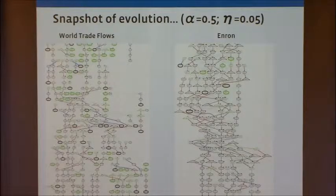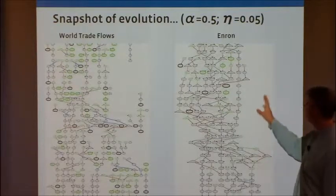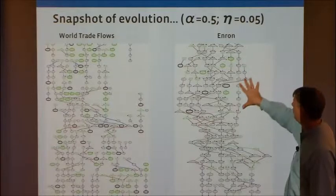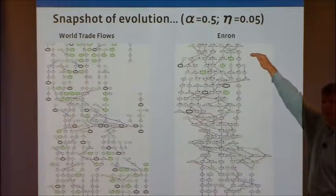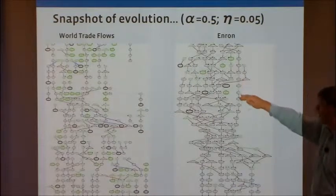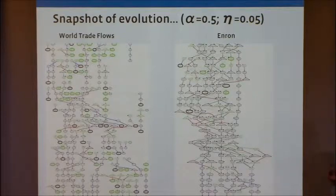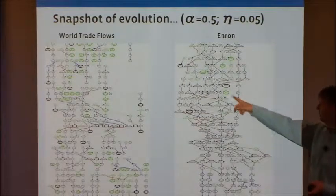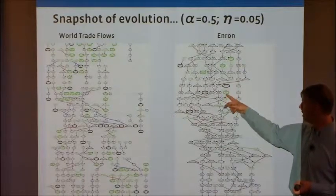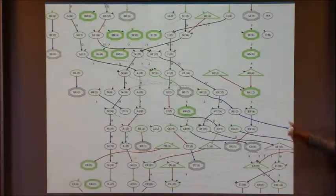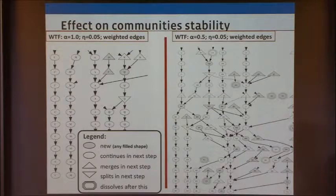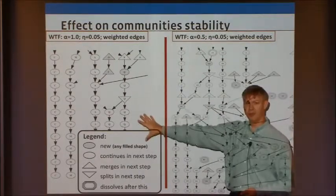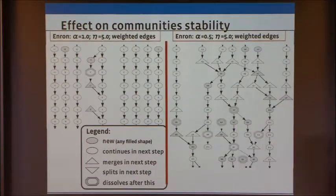Looking at the kind of mess that comes out: for Enron with alpha 0.5 and a small eta, every single row is one time step, and you can see it's a huge mess — very, very chaotic. The color codes are whether a community is born or dies, whether it splits or merges. If you move to nodes moving all over the place, it's pretty chaotic. But if you clean it up and just look at community structures, high alpha gives you a lot of stability, while lower alpha makes things much more chaotic. You see the same thing on the Enron data as well.